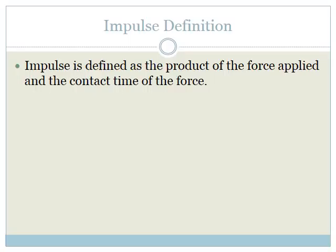Impulse is defined as a product of the force applied and the contact time of the force. So basically, we can write that the impulse of a force is equal to F_res, which is the resultant force that you supplied, multiplied by the time that that force is in contact with it. Therefore, F_res times change in time is called the impulse of a force.